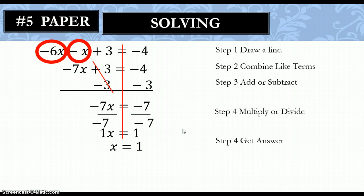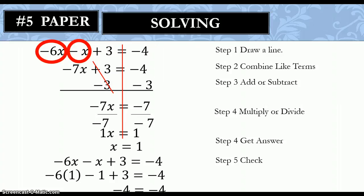And then, step number 5. Once you get your answer, you want to check it. You want to make sure that is correct. So, you take the original equation and you substitute in the 1 for the x. Wherever you see an x, you put a 1. When you do that, you end up with negative 6, open parenthesis, 1, close parenthesis, minus 1, plus 3, equals negative 4. And when you do that calculation, you end up with negative 4 equals negative 4, which is a true statement, which means that x equals 1 is indeed correct. And we are done.